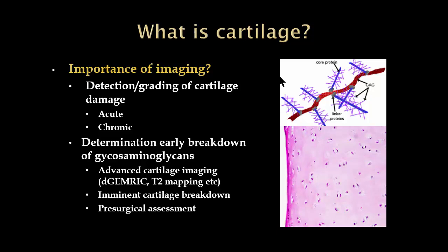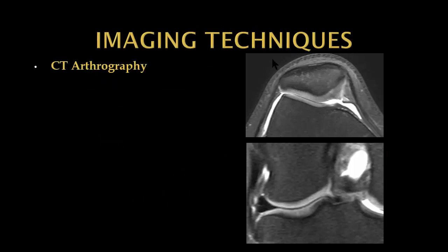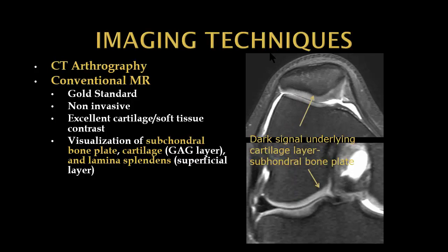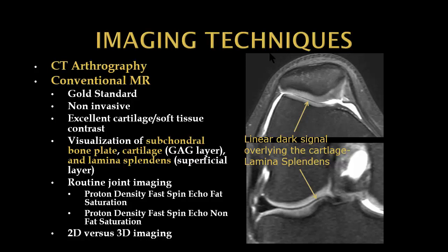Imaging has traditionally been used for detection and grading of cartilage damage and determining acute versus chronic injury. That very microscopic, histologic breakdown of cartilage softening was not available by imaging until we developed advanced cartilage imaging techniques. Currently, CT arthrography is generally reserved for patients who can't undergo conventional MRI. Conventional MRI is our gold standard — it's non-invasive, provides excellent cartilage and soft tissue contrast, with great visualization of the glycosaminoglycan layer, dark subchondral bone, and dark lamina splendens.